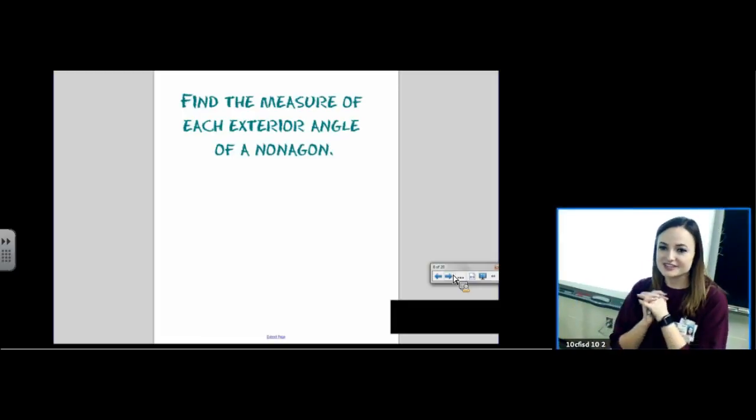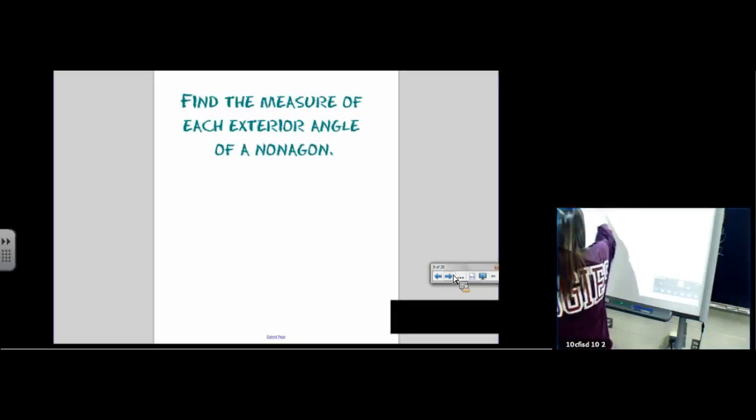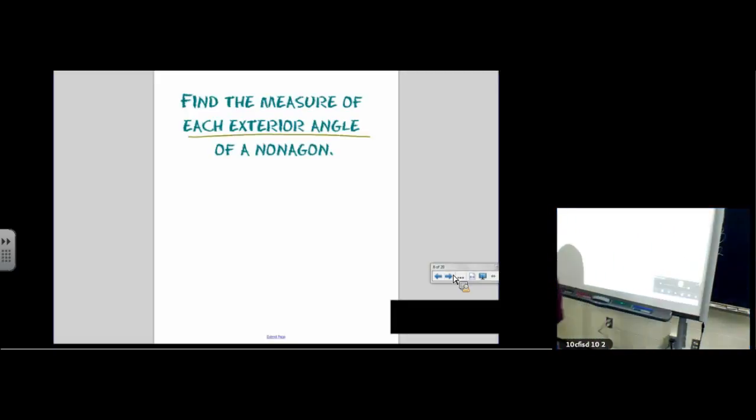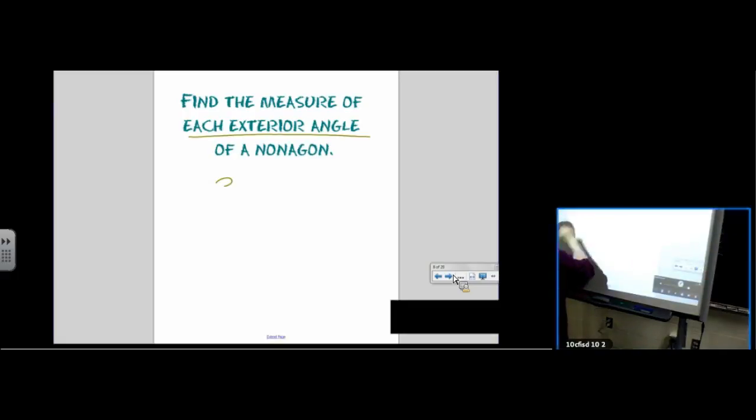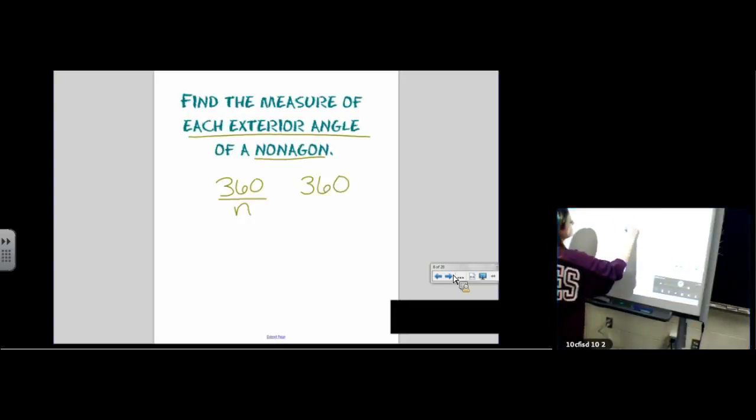So now we're looking for the measure of each exterior angle of a nonagon. We just go back to our formulas and we have the measure of each exterior angle is 360 divided by the number of sides. This is a nonagon. We want you to memorize the names of our shapes. A nonagon has 9 sides. So the formula we use is 360 divided by 9. Plug that into your calculator. You should get 40 degrees.